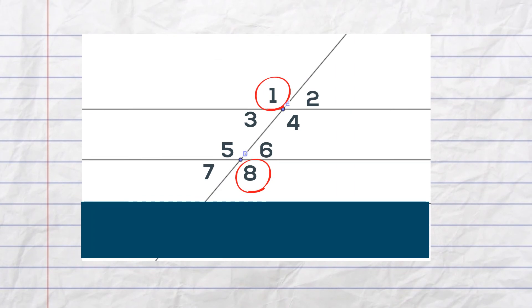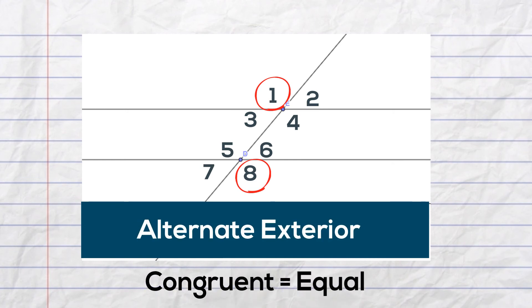How about this pair of angles? These are alternate exterior angles and they also are congruent.